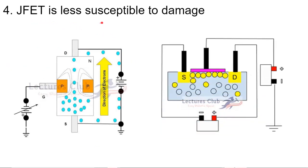The fourth difference is that JFET is less susceptible to damage. If you increase the gate-to-source voltage in a JFET, the depletion region between the P-type and N-type material keeps increasing, creating very high resistance. There are fewer chances that electrons will break through this high depletion region and move towards the gate. But in case of MOSFET, if we start increasing the voltage at the gate, more and more electrons gather near the gate and there are higher chances that these electrons will break the insulating layer.